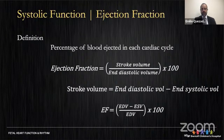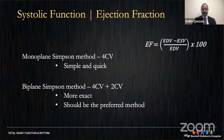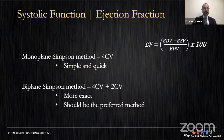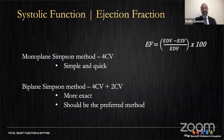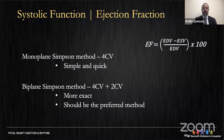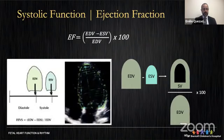Ejection fraction is the percentage of blood ejected from a ventricle in each cardiac cycle, calculated using diastolic and systolic volumes. It is typically obtained by the biplane Simpson's method. The monoplane method from a four-chamber view is quick and simple, but the biplane method using both the four-chamber and two-chamber views is more reliable and should be preferred.